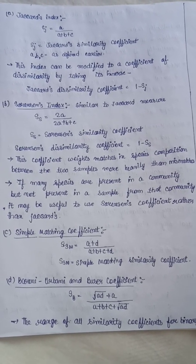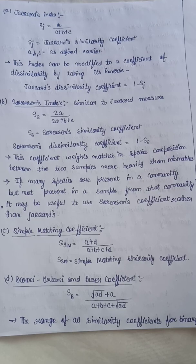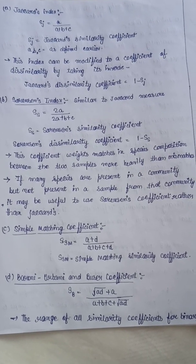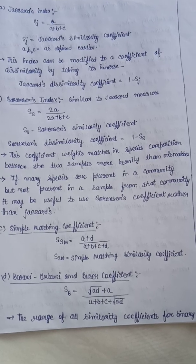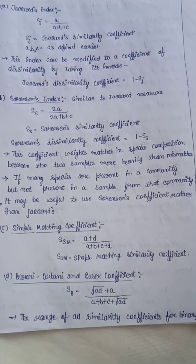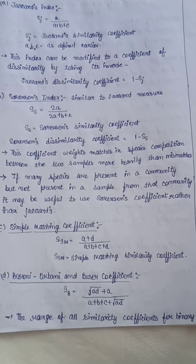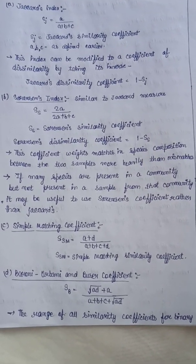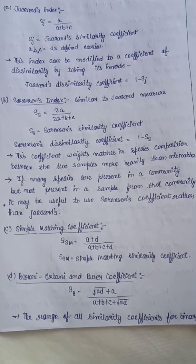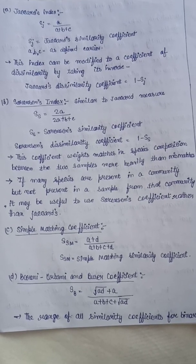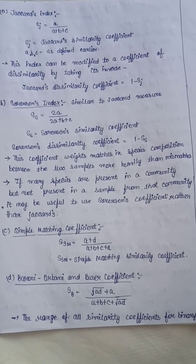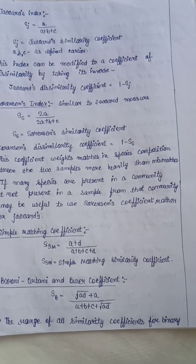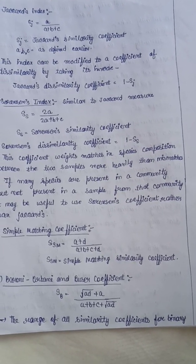If many species are present in a community but not present in a particular sample, it may be useful to use Sorensen's coefficient rather than Jaccard's. Third is the simple matching coefficient: SSM = (a + d) / (a + b + c + d). Fourth is the Baroni-Urbani and Buser coefficient: SB = (√(ad) + a) / (a + b + c + √(ad)).